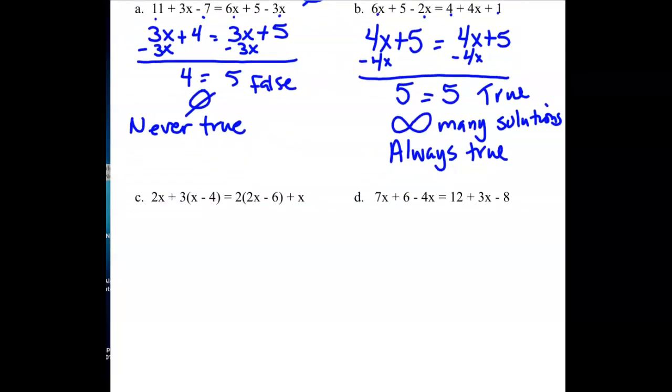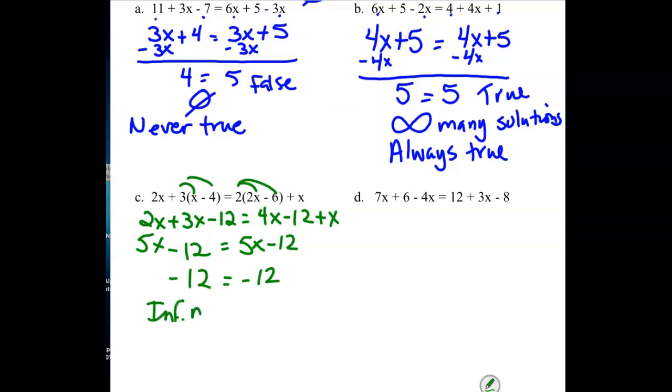Let's try a couple more examples. Here we have some distributing that we need to do. So we have 2x plus 3x minus 12 equaling 4x minus 12 plus x. Combining like terms, 5x minus 12 equals 5x minus 12. So again, I end up with a true statement, which means infinitely many solutions. We can write it like this, or we can just use that infinity symbol. That means it's always true.